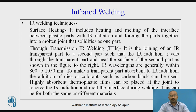IR welding techniques: Surface heating includes heating and melting of the interface between plastic parts with IR radiation and forcing the parts together into a molten joint that solidifies as one part. Through transmission IR welding (TTIR) involves joining an IR transparent part to a second part, with IR wavelengths generally within 800 to 1,050 nanometers. To make a transparent part absorbent to IR radiation, dyes or colorants such as carbon black can be added. A highly absorbent thermoplastic film can also be placed at the joint to receive IR radiation and melt the interface during welding.